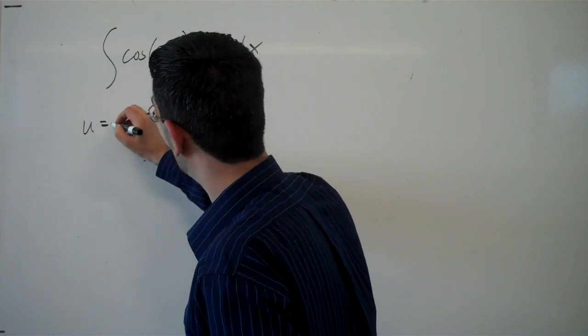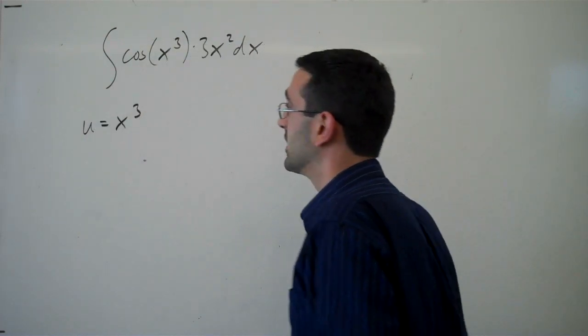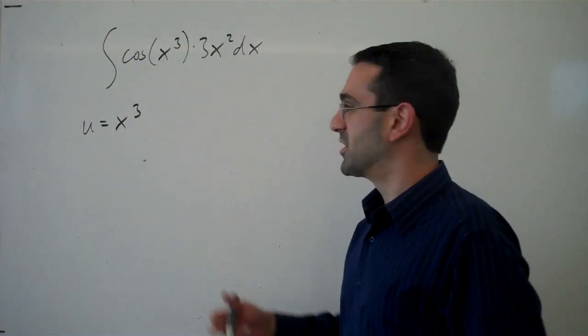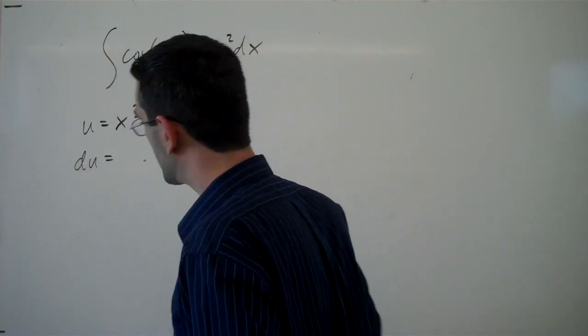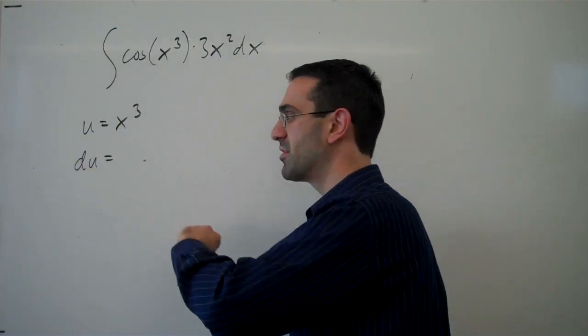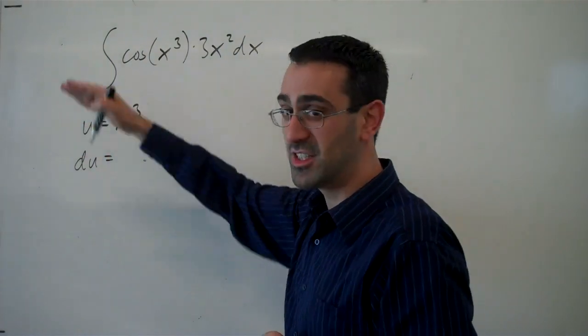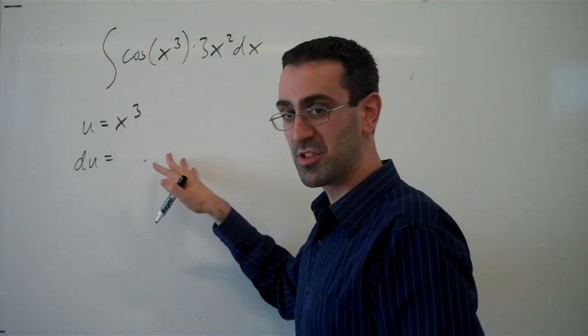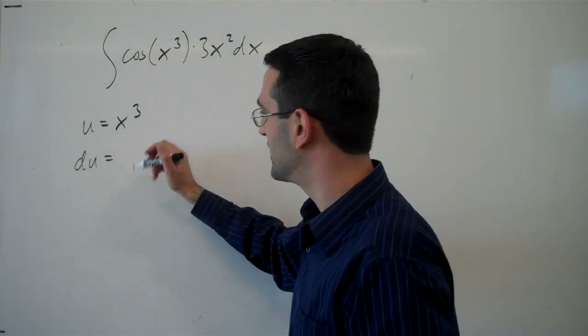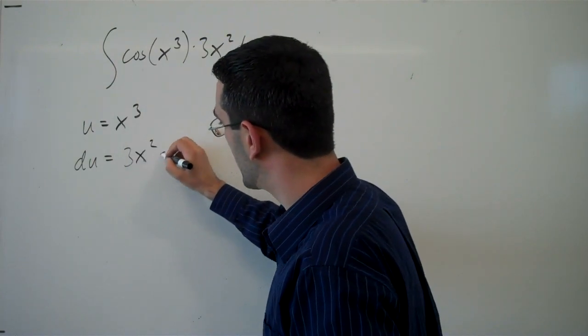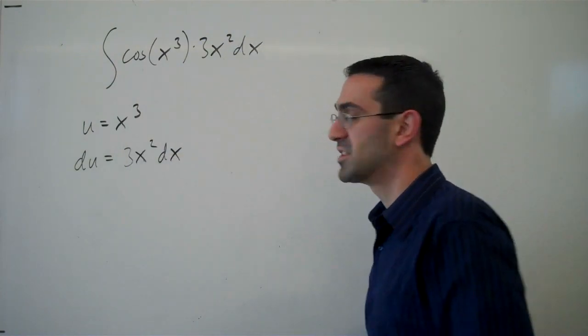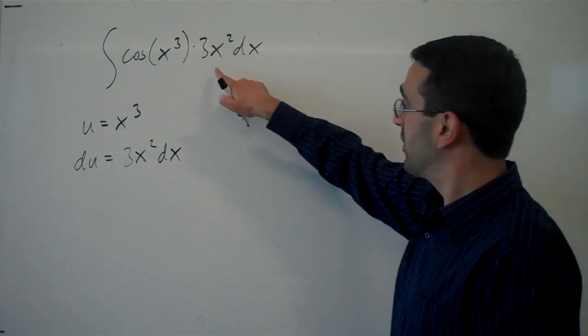Now we need the derivative of u, and we're going to save ourselves a little setup here and say du is 3x² dx times the differential dx.